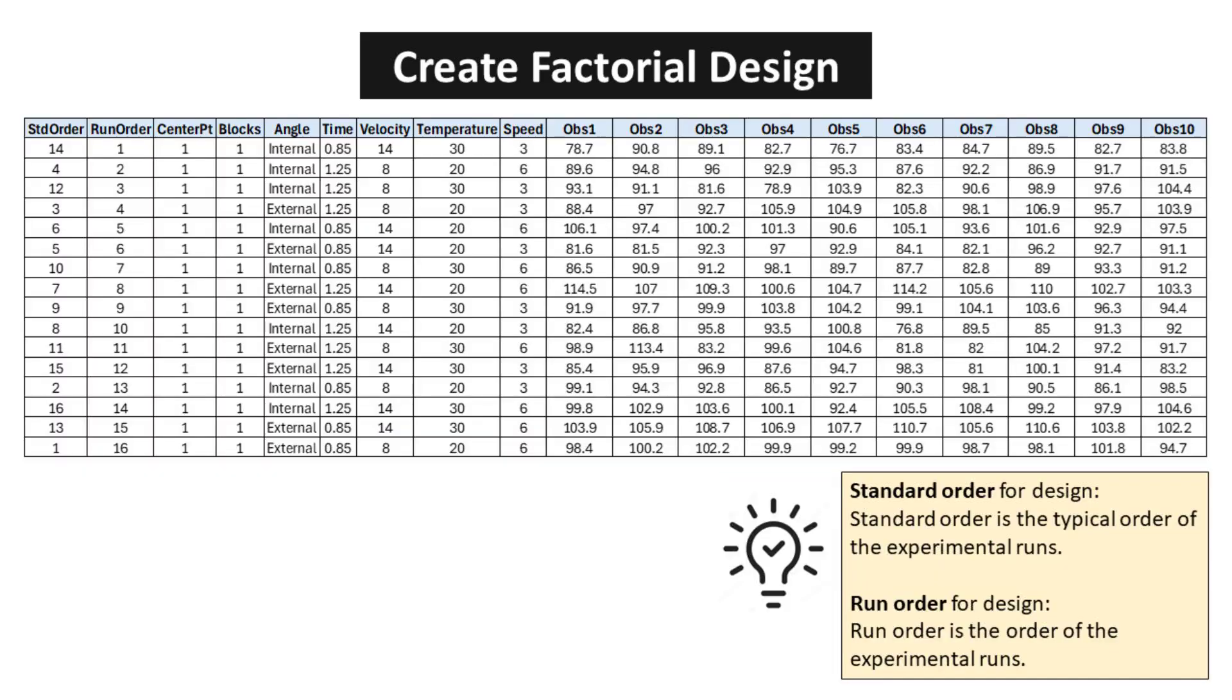The table presented here displays the outcomes of the design experiment regarding coating thickness. Ten repeated measurements are recorded for each experimental run. Standard order is the typical order of the experimental runs. Run order is the order of the experimental runs.